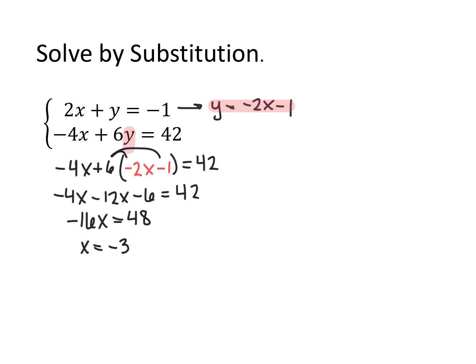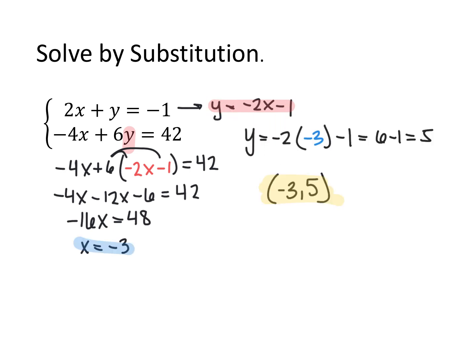Because this is a solution to both equations, it doesn't matter which equation I plug x equals negative 3 into to solve for y. Since this equation is already solved for y, I plug negative 3 in for x and got y to be 5. Since this is a system of linear equations with no context, the solution is the coordinate point negative 3 comma 5.